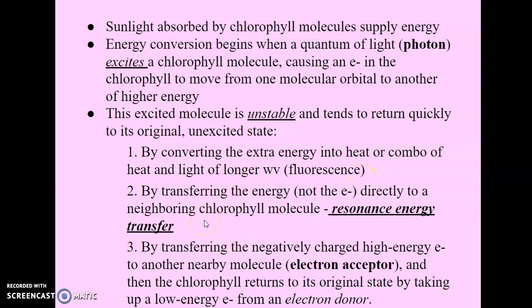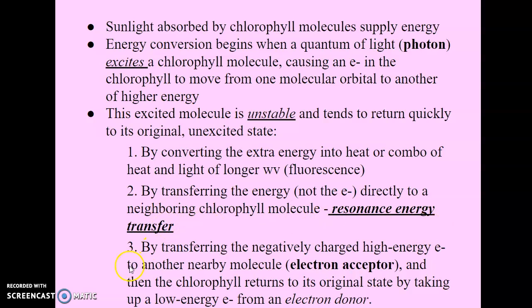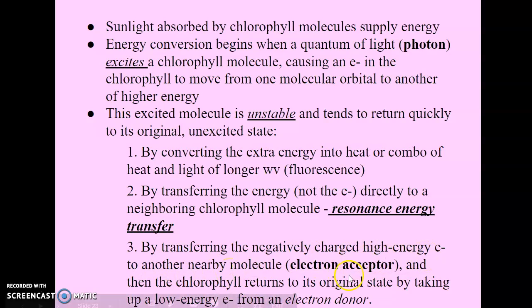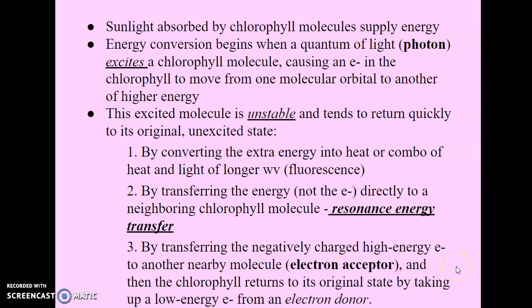The second way is by transferring the energy — not the electron itself, but the energy — directly to a neighboring chlorophyll molecule. That's what we call resonance energy transfer, and we see that happen in photosynthesis. The third way is by transferring the negatively charged high-energy electron to another nearby molecule, called an electron acceptor. The chlorophyll then returns to its original state by taking up a low-energy electron from an electron donor.